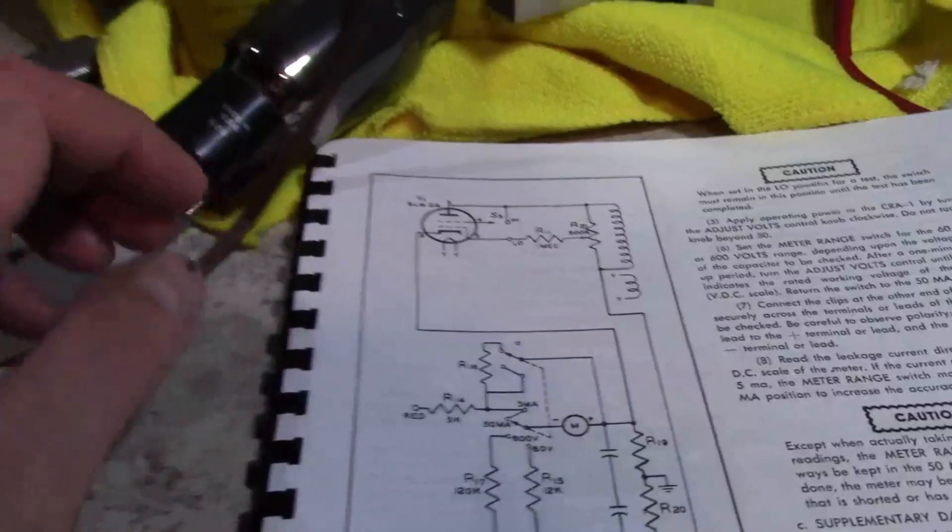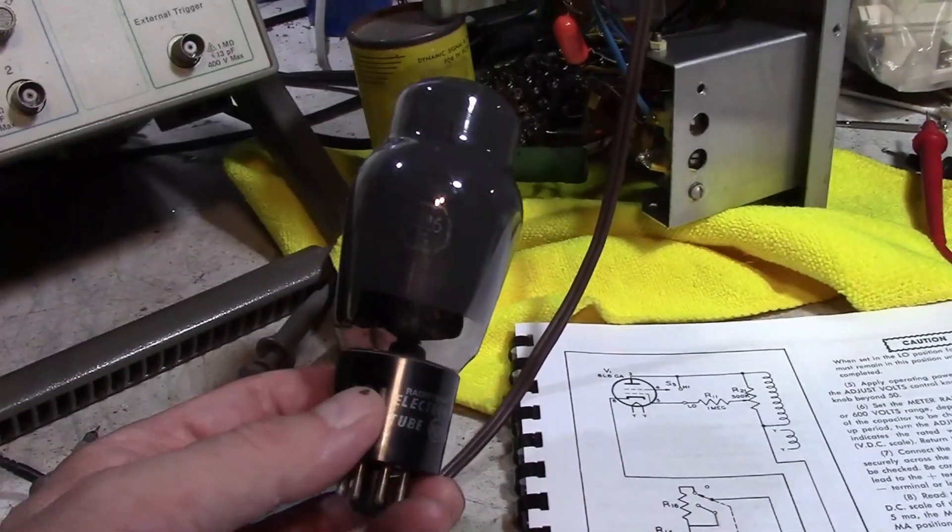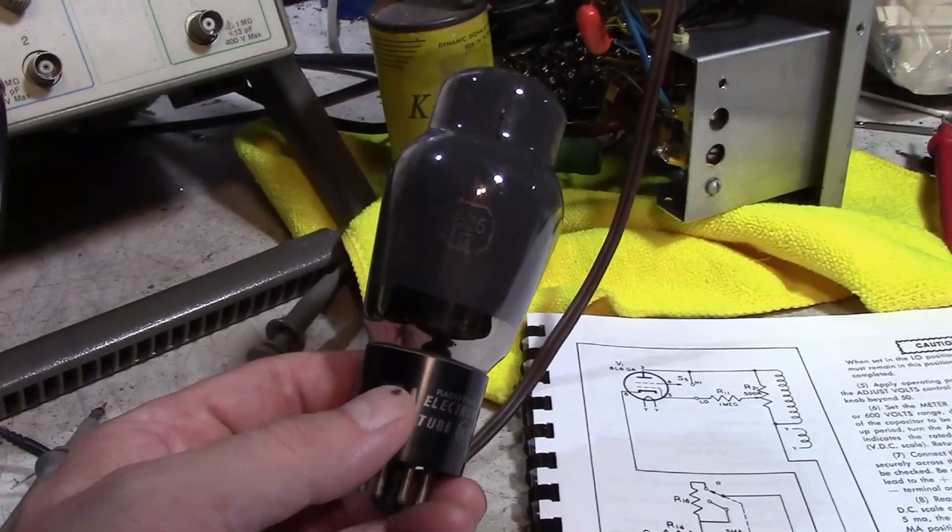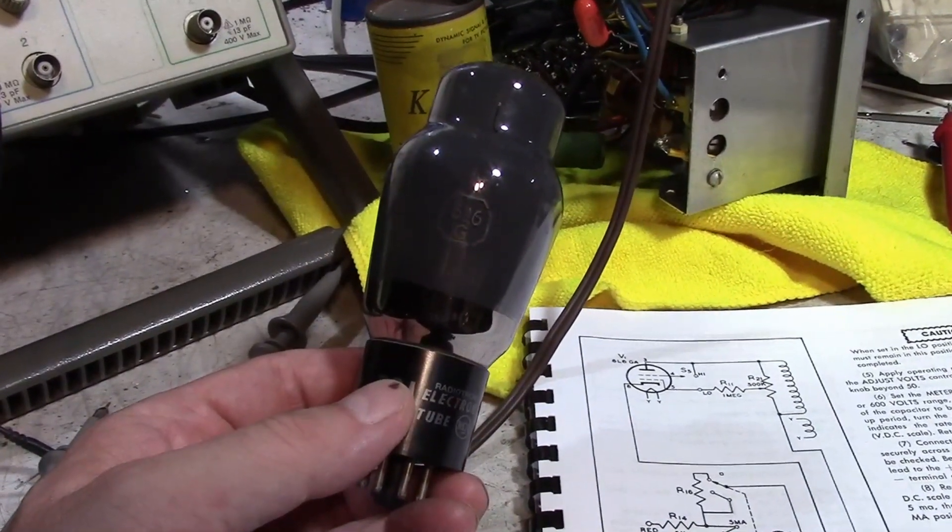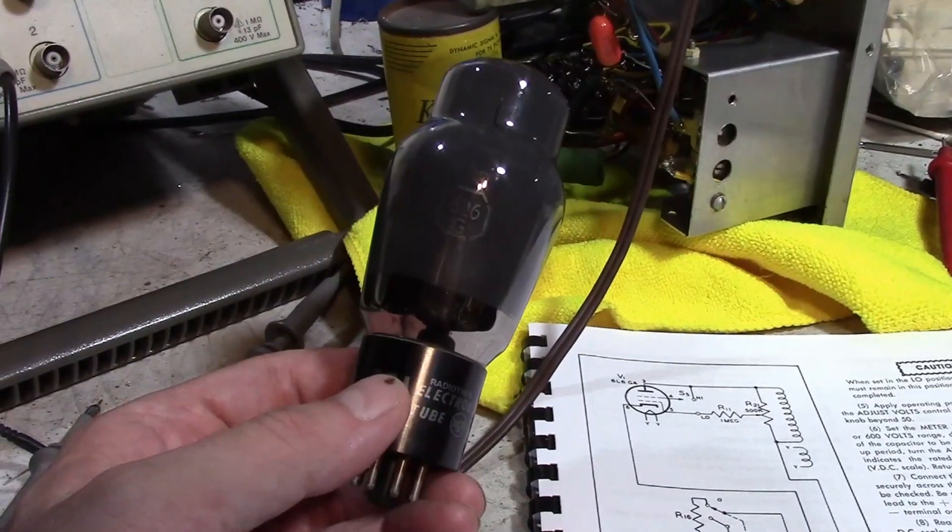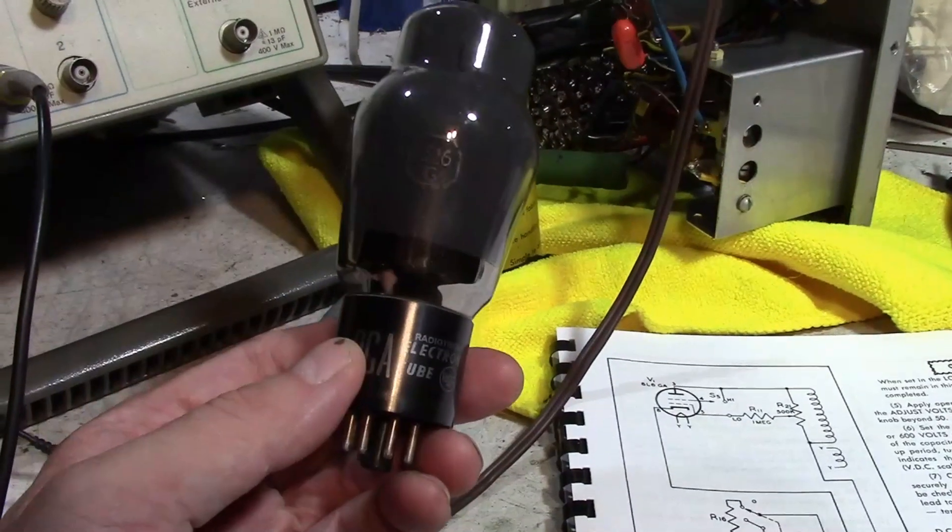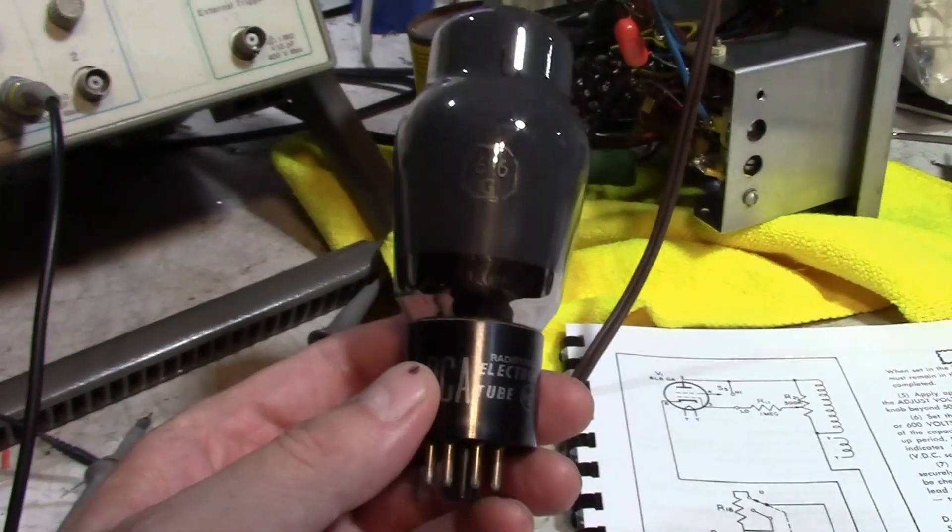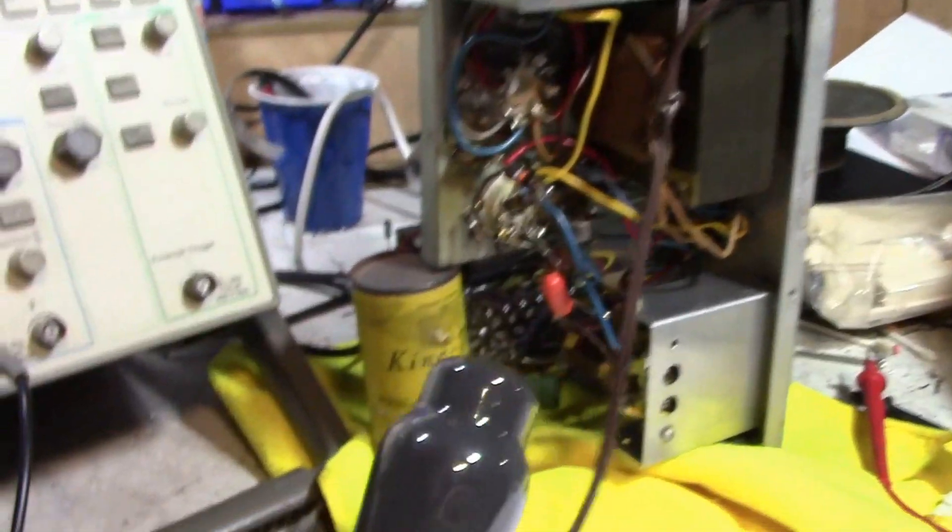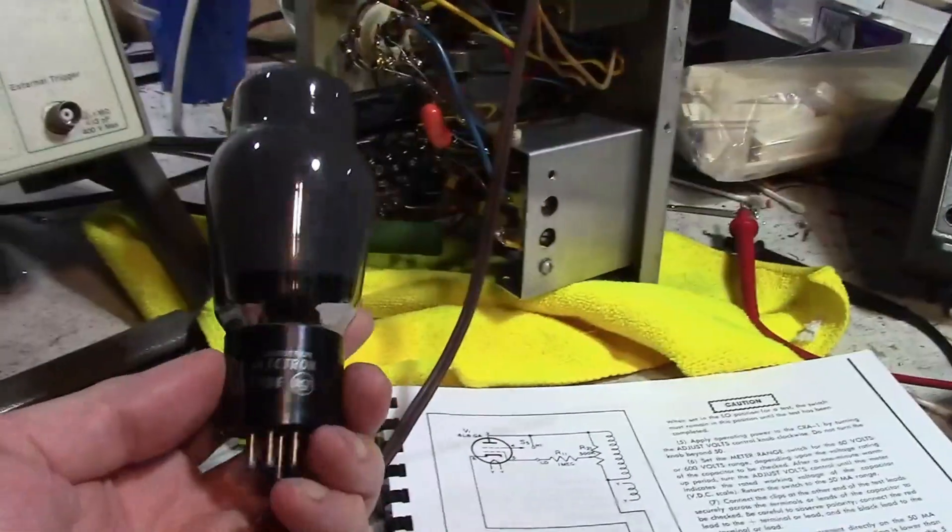It came with a 6L6G and that's what I tried replacing it with. I don't have any GAs or GCs on hand - they have slightly improved specs over the G. However, this is what it came with and I'm pretty sure it's the original because the date of manufacture is about the same as the capacitor analyzer and it matches the other two tubes in there, both RCA from about the same month of production.